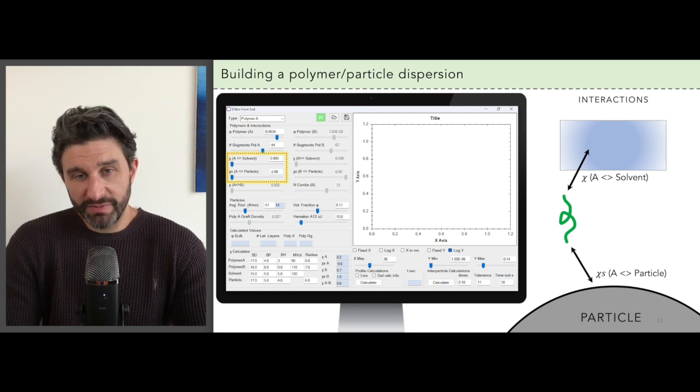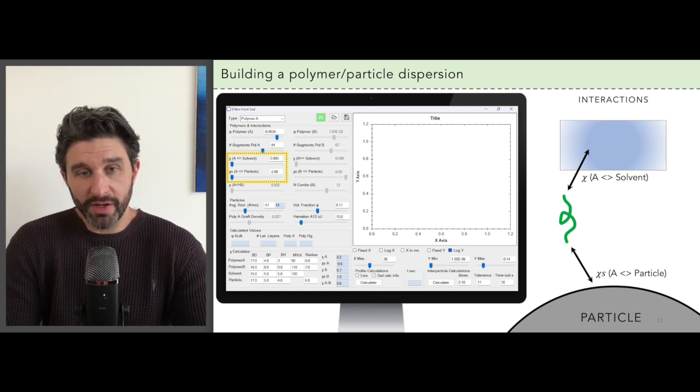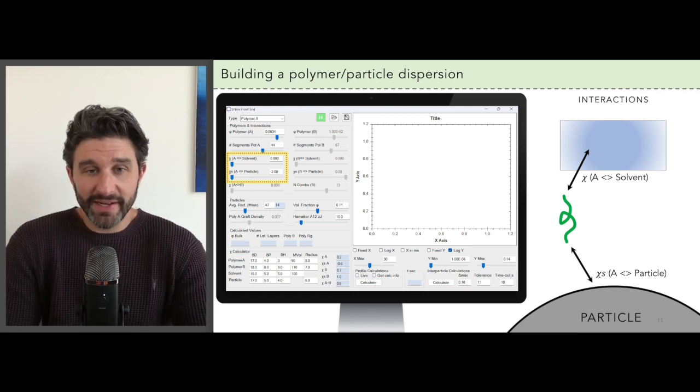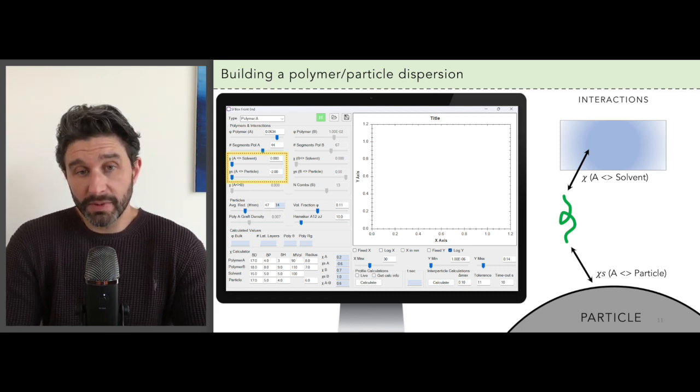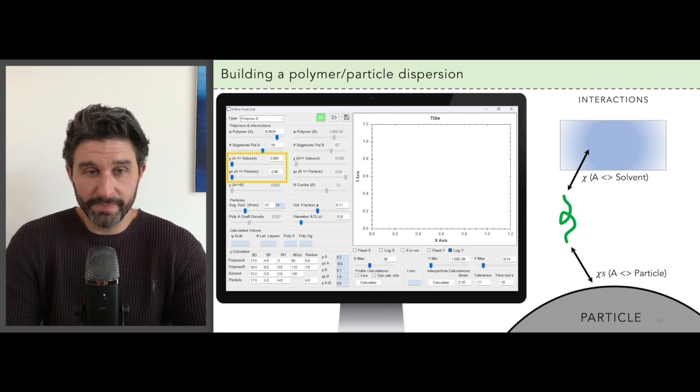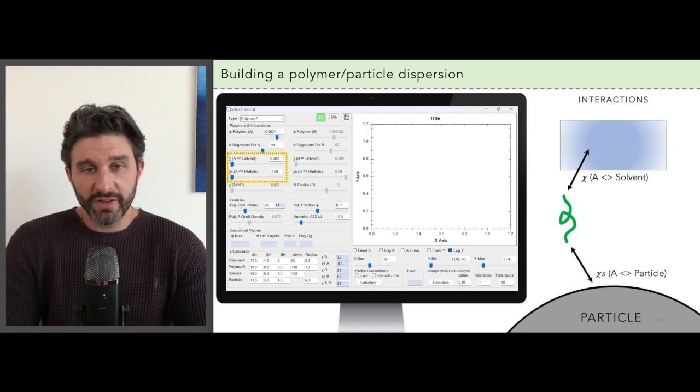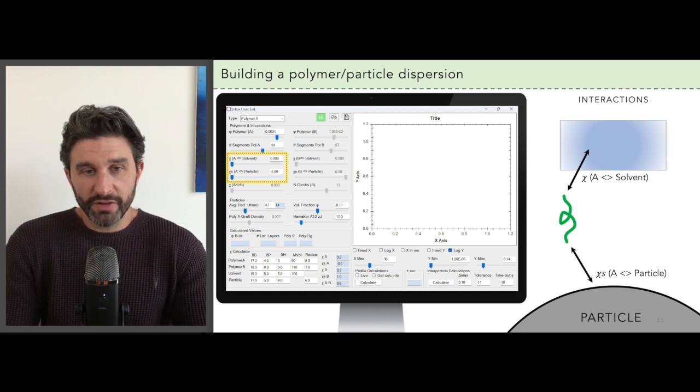Okay, so we've defined the polymers and now we go on to define how they interact with the particles and the solvent. This is set by polymer-solvent and polymer-particle chi parameters. In this case you just see the interactions for the single homopolymer with the solvent and particle.